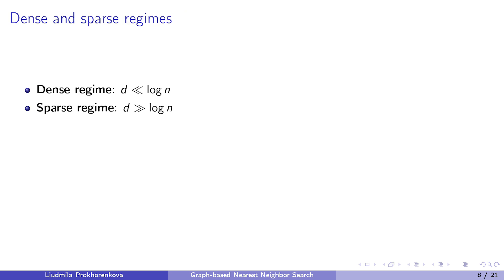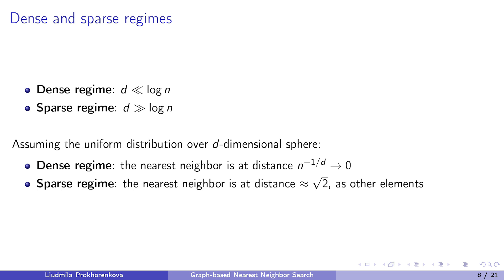Before going deeper into the limits and benefits of graph-based algorithms, it is important to distinguish between two principally different regimes: dense and sparse. To define these regimes, we compare the dimension of the dataset with the logarithm of the number of elements. Assuming the uniform distribution over the d-dimensional unit sphere, in the dense regime, the distance from a given point to its nearest element tends to 0 with n.